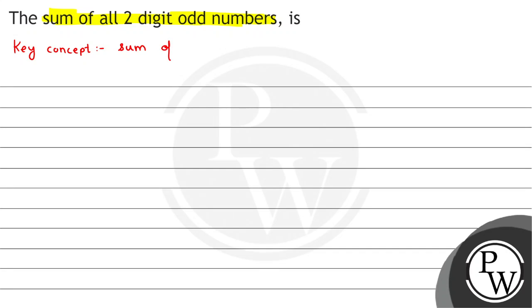Sum of n terms of an AP. The formula is: Sn = n/2 [2a + (n-1)d]. And the formula for the nth term of an AP is...